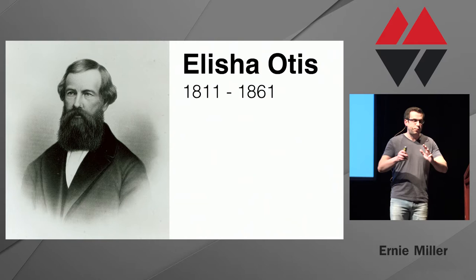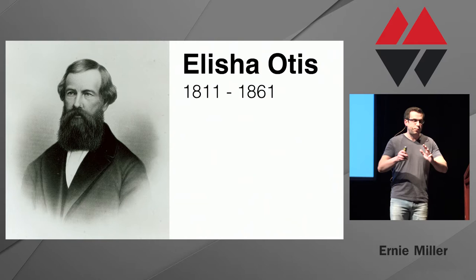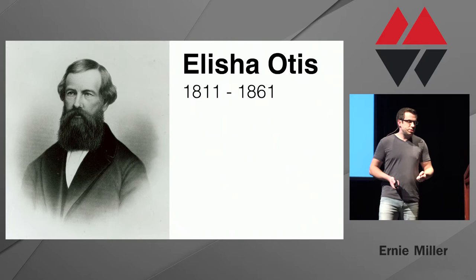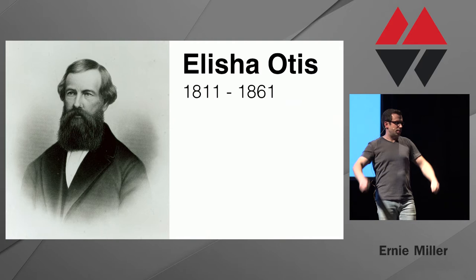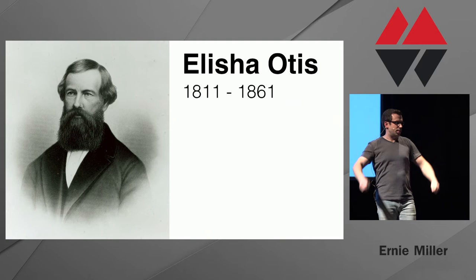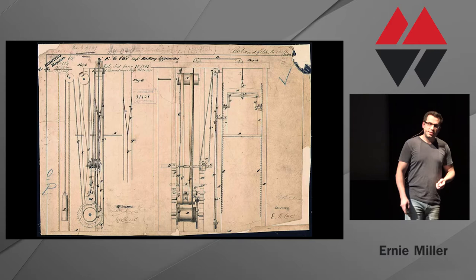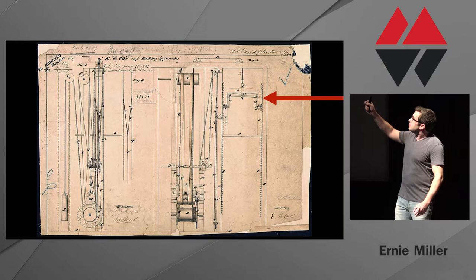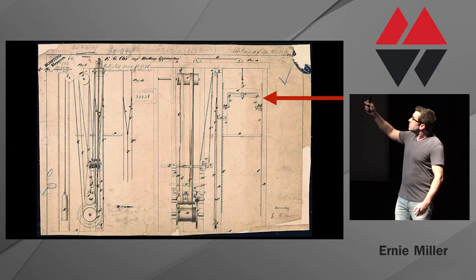A gentleman by the name of Elisha Otis — who first and foremost had a beard to rival Mike's — was a tinkerer along with his sons. At age 40, in 1851, he was managing the process of converting an abandoned sawmill into a bed frame factory, and while cleaning up, he was looking into how he could get debris up to the upper levels of the building. Hoists and elevators existed, but they had one really important flaw: if somebody cut the rope, whatever was on it was either broken or dead. So he and his sons designed what they called a safety hoist that wouldn't fall to the ground if it broke — it had teeth in a rail on either side, with a spring so that when the rope was cut and tension released, pegs would shoot out and catch in those teeth.